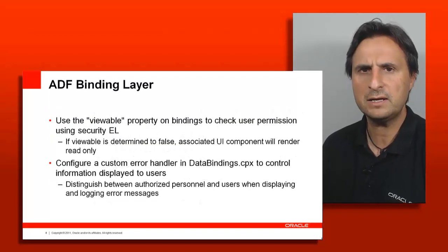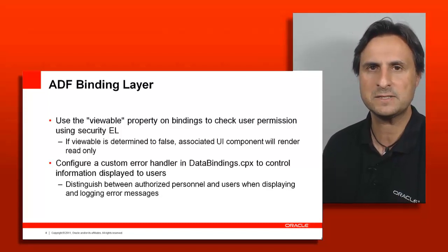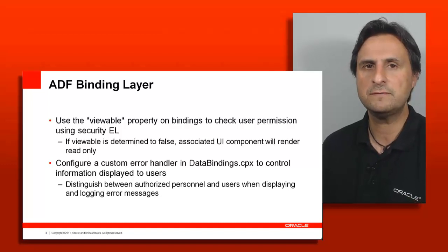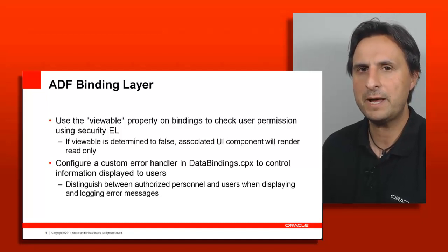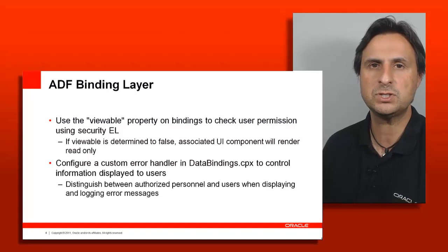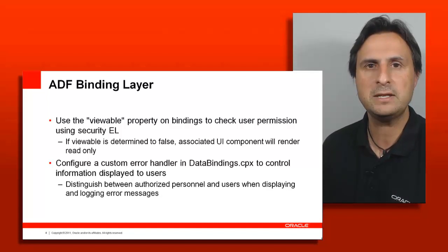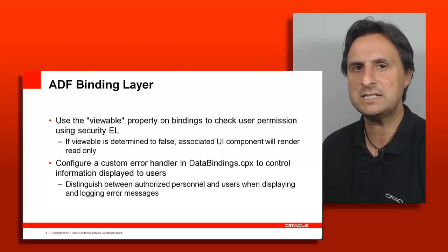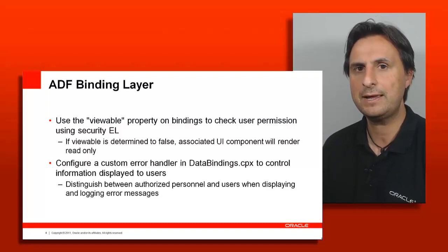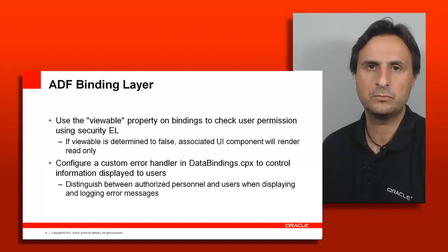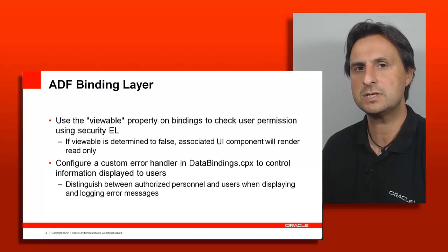The binding layer automatically protects every page in an unbounded task flow that has a page definition file associated, as part of what ADF security does. Beyond that, there is a viewable property on several bindings — such as attribute value bindings — where you can use expression language to check permissions. This might be a custom resource permission for menu security or checking access to a specific entity, allowing you to control visibility and updatability of items based on security permissions.